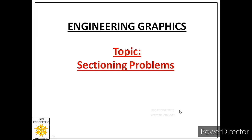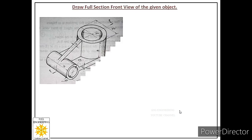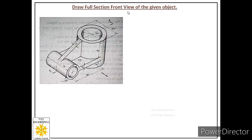Welcome students. Today we will solve the fifth problem on sectioning. We are given one object and we are asked to draw its full section front view. This side is the front side of the object marked with an arrowhead, so we have to look at this object from this side and draw its front view as a full section.